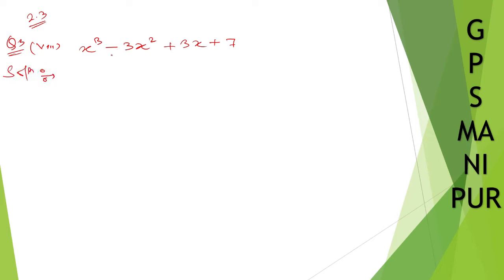So looking at this question, we can make it into the formula. So a cube minus thrice a square b plus thrice a b square plus b cube.